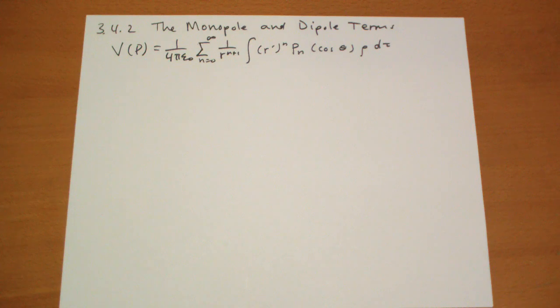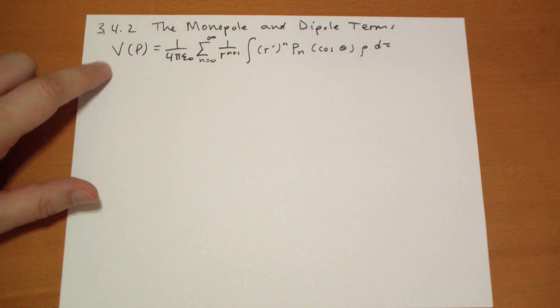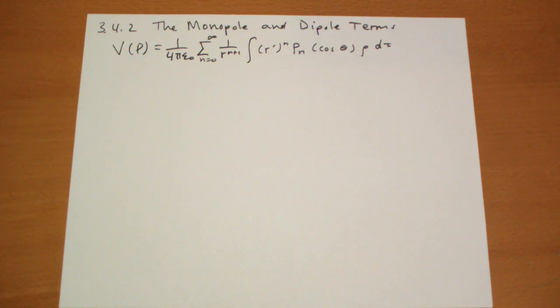Section 3.42 covers the monopole and dipole terms of this newly rewritten potential that contains the multipole expansions.